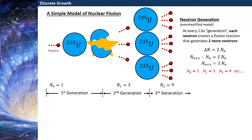And that indeed makes sense. So if you start with N₀ equal to 1, or 1 neutron, then in the next generation you'll have 3 neutrons. The one after that you'll have 9, and so on and so forth. You can easily see how you can calculate the number of neutrons from an equation like this.